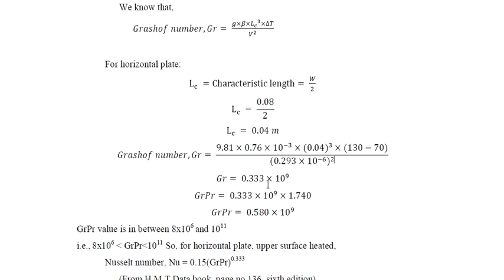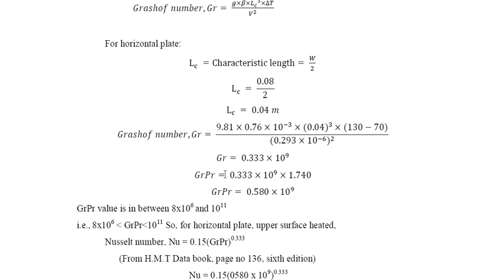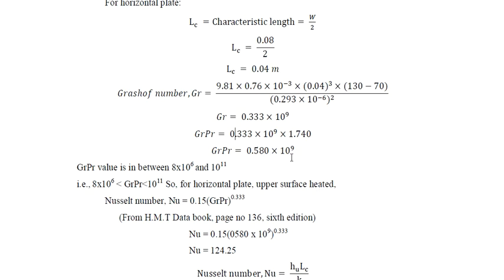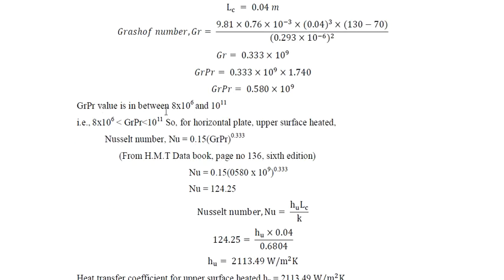The GrPr product is: 0.333 × 10⁹ × 1.74 = 0.58 × 10⁹. This value falls in the range 8 × 10⁶ to 10¹¹. For a horizontal plate, the upper surface and lower surface heated cases are treated separately. We find the heat transfer coefficient for the upper surface heated condition first, then for the lower surface heated condition, and then sum them to get the total heat transfer.